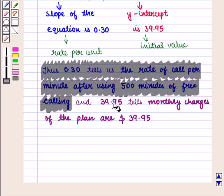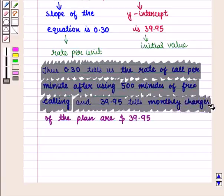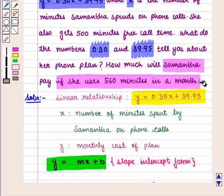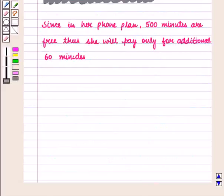And 39.95 tells that monthly charges of the plan are $39.95. Now we have to find the charges which Samantha will pay if she uses 560 minutes in a month.